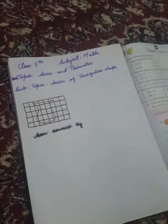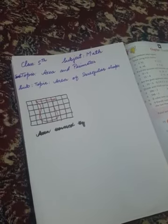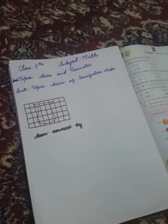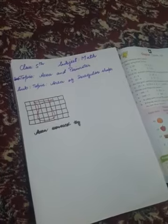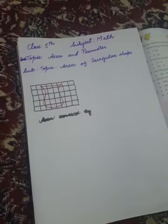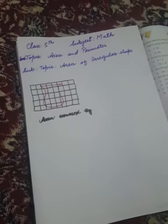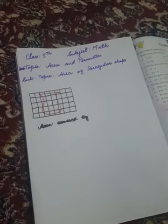Assalamualaikum dear students, hope you all are fine. Today we are going to start a new subtopic of chapter area and perimeter: area of irregular shapes. Irregular shapes mean figures that don't have exact breadth. We cannot find the exact breadth or length. Figures which are irregular or curved.